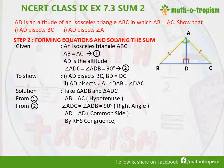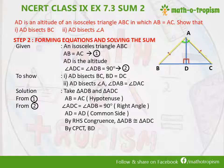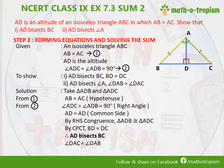By RHS congruence, triangle ADB is congruent to triangle ADC. By CPCT, BD is equal to DC, which means that AD is bisecting BC into two equal halves. Similarly, angle DAB is equal to angle DAC, so AD bisects angle A. Thus shown. Thank you.